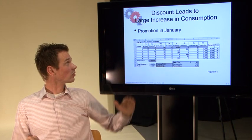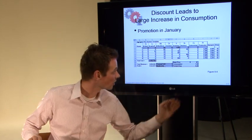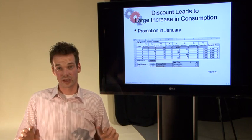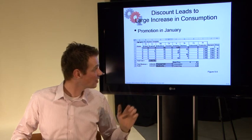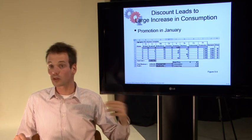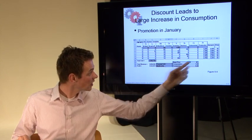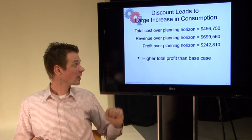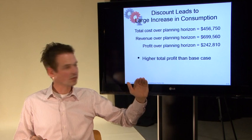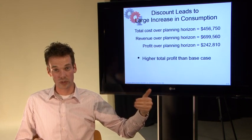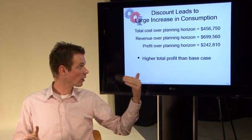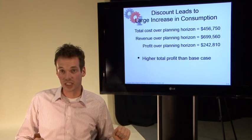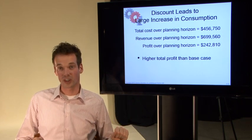In this case the discount leads to a larger increase in consumption. So we redid our forecasting again and we increased the demand, the forecasted demand in January. In this case it went to 4440. What happened is that the profit increased from 221,000 to 242,000. So a higher total profit than the base case itself. The base case is the case in which we all have 40s.